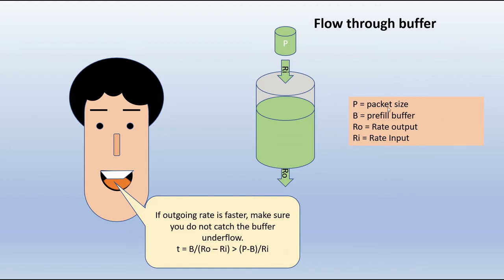Let's understand the terminology. P is the packet size, B is the pre-fill of the buffer, which means the amount of data you have to have in the buffer before you start transmitting that packet.